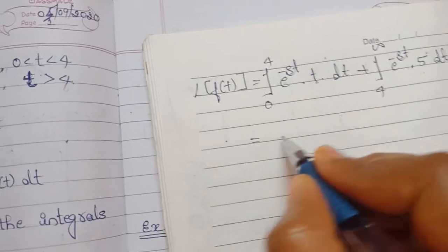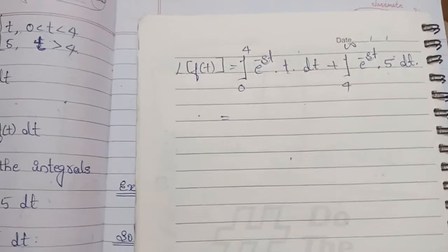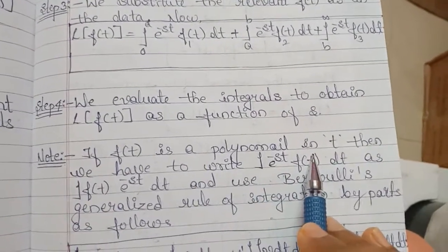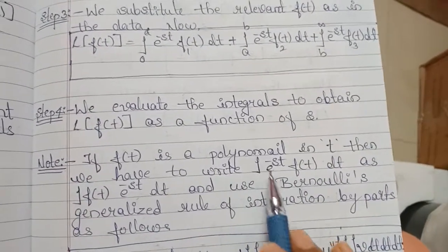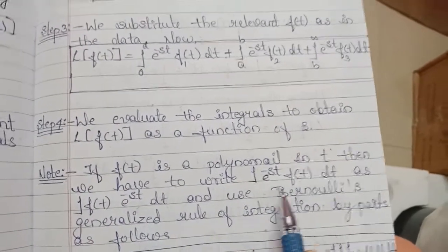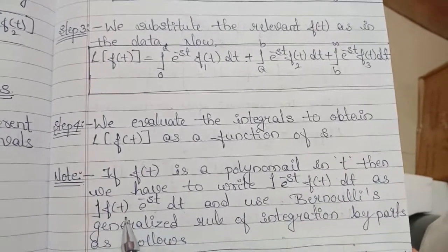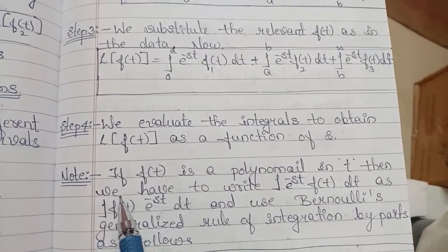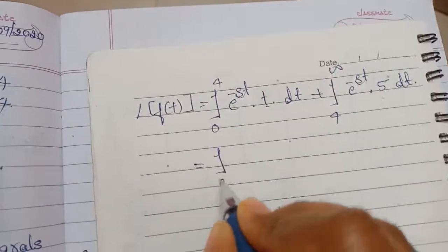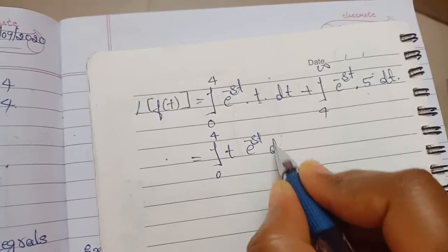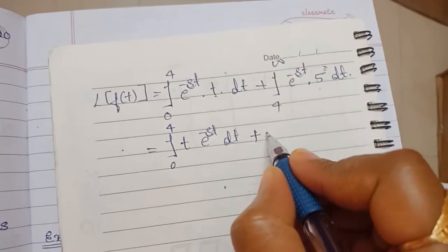Before using Bernoulli's rule, we know that if f(t) is a polynomial in t, we need to write the integral as integral of f(t) · e^(−st) dt. So we rearrange: integral from 0 to 4 of t · e^(−st) dt, plus 5 taken outside as a constant, times integral from 4 to infinity of e^(−st) dt.